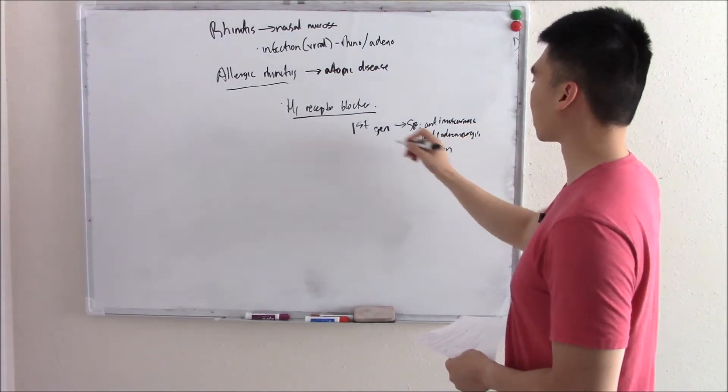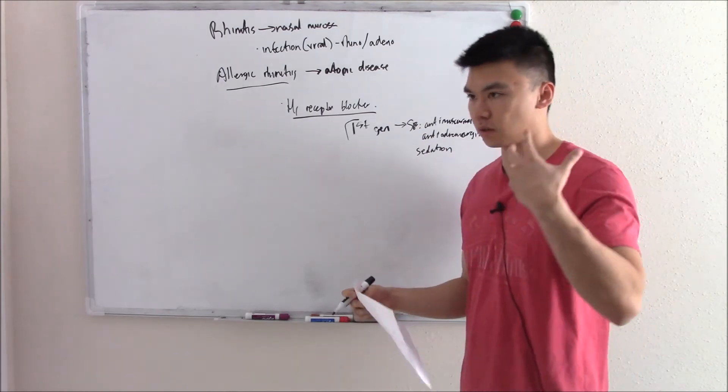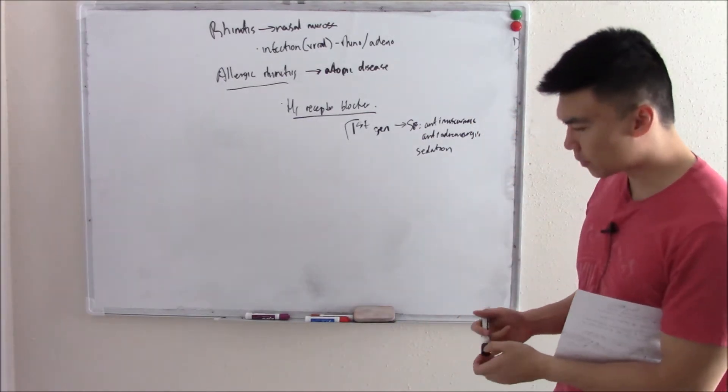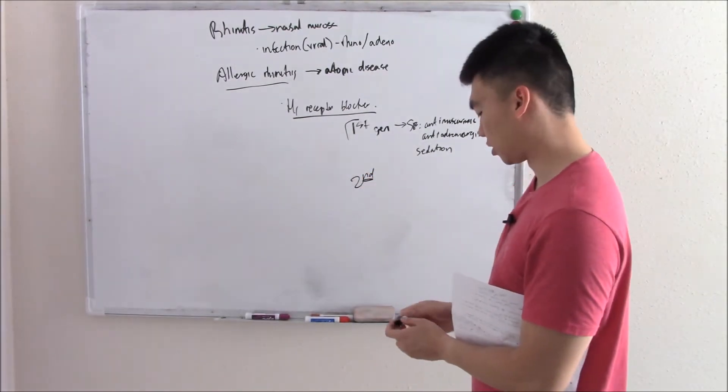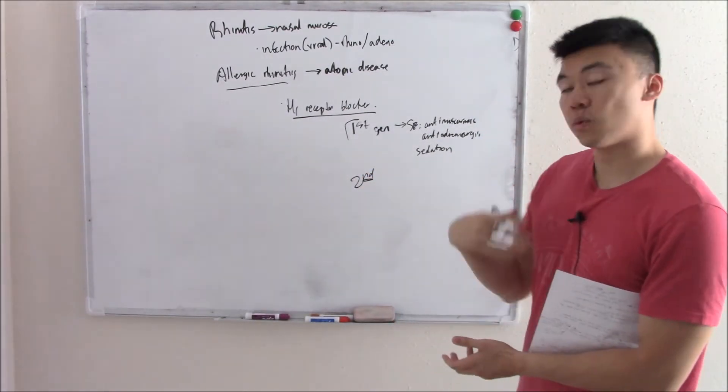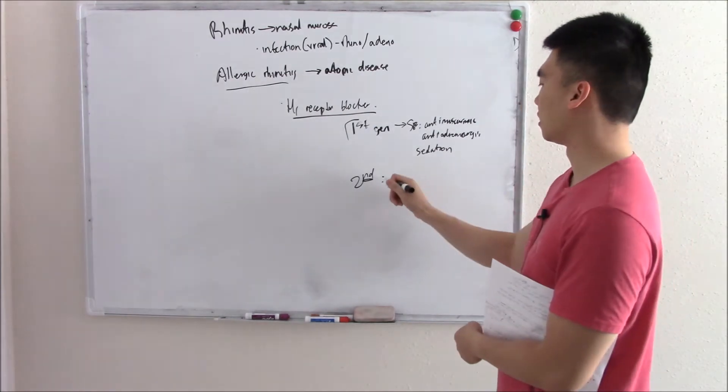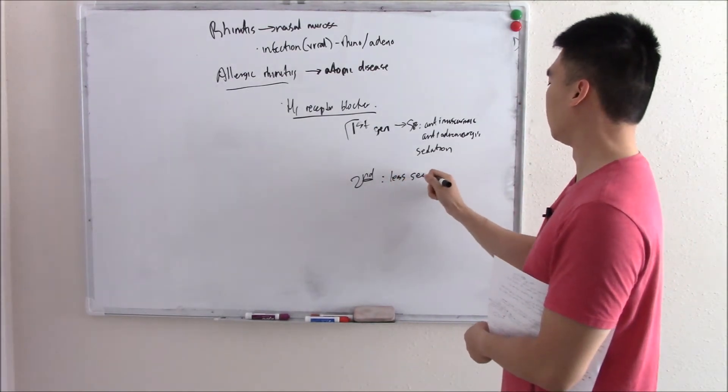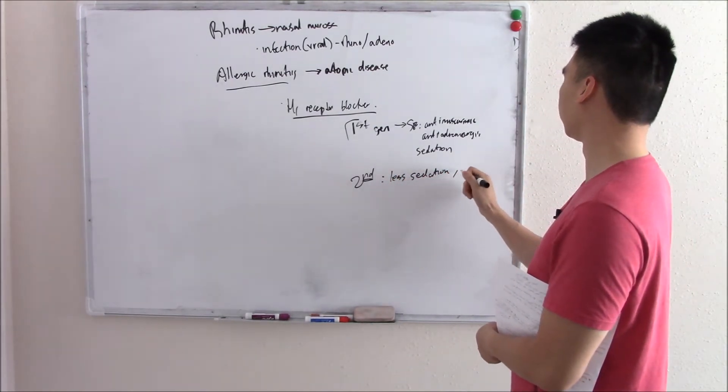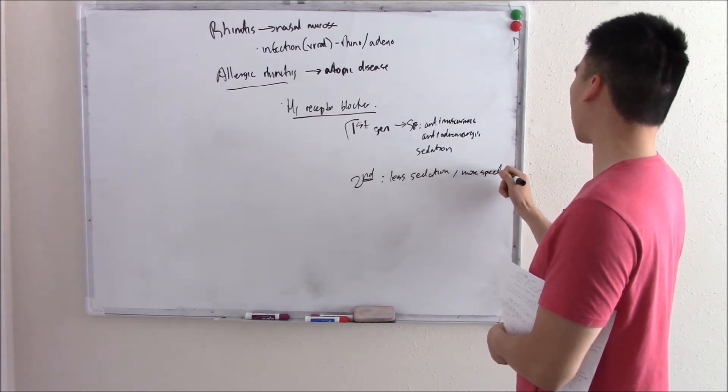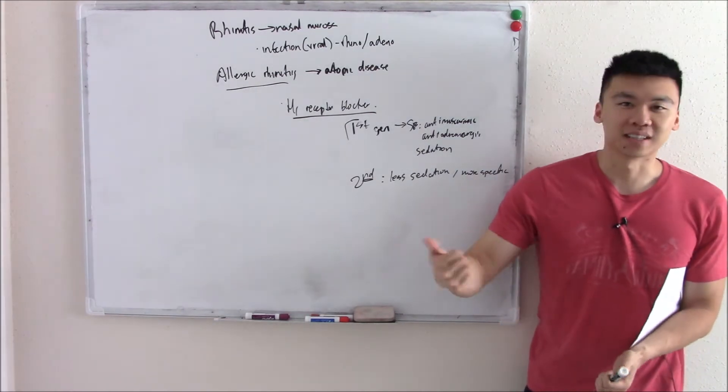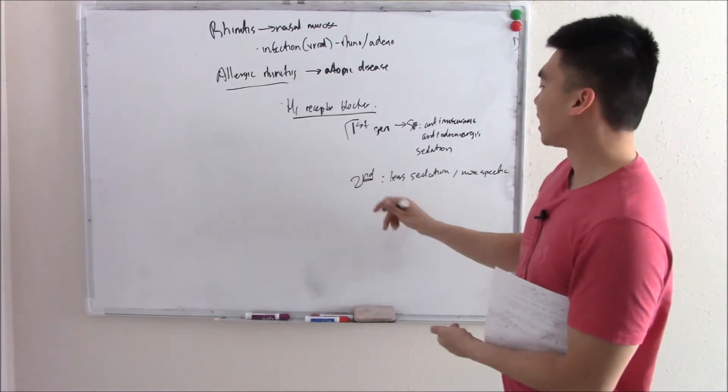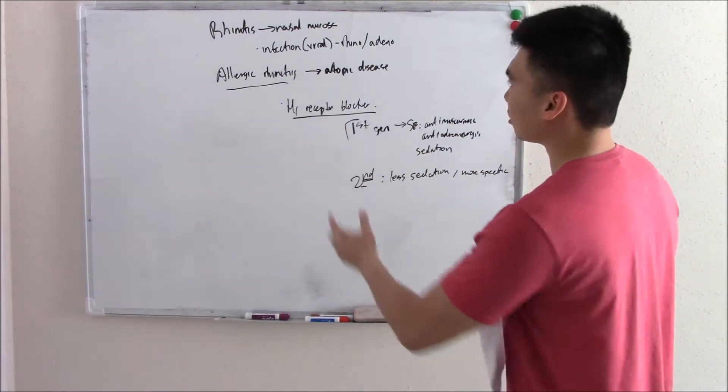So Benadryl actually was our first gen. So Benadryl caused sedation. But we got a little bit better. And then when we pumped out our second gen histamine H1 receptor blockers, these were more specific. So you get less sedation because they were more specific. These are those specific allergy drugs you can find at Walgreens or whatever. Those are your Zyrtec and whatever. Second gen, a little bit more specific. That's allergic rhinitis.